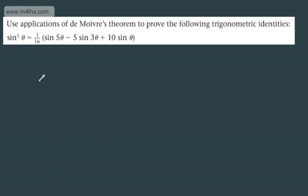This video follows directly on from the last one, and we're again going to use applications of De Moivre's theorem to prove the following trig identity. This one is: sine to the fifth theta equals one sixteenth of the quantity sine 5 theta, minus 5 sine 3 theta, plus 10 sine theta.